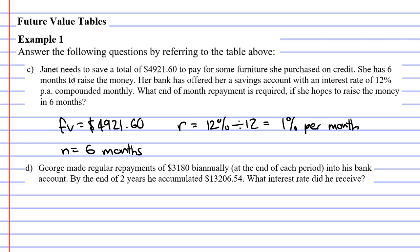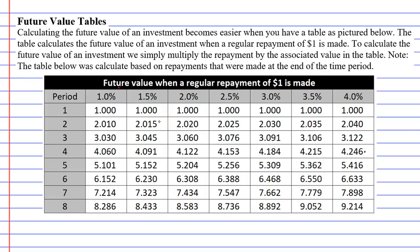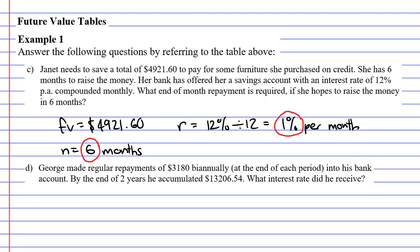So, I'm going to remember these two values, our six for the number of time periods, and our interest rate of 1%. And I'm going to go back to my table and circle these, 1% and 6, and they're going to line up to 6.152. Now, going back to question C, the magic number, I guess you could call it, that we got was 6.152.